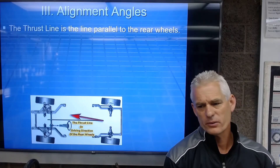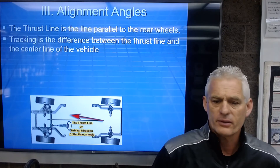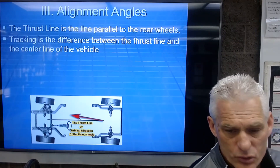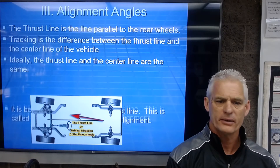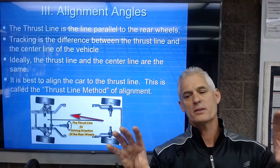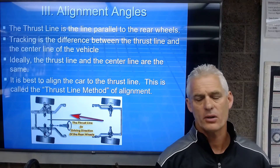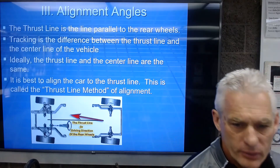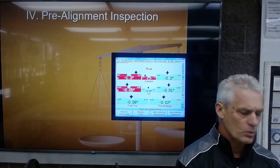It is best to align the car to the thrust line — called the thrust line method of alignment. If aligned to the thrust line, the steering wheel will be straight when driving straight. If aligned only to the geometric center line and the car is dog tracking, the steering wheel will be slightly turned while going straight.